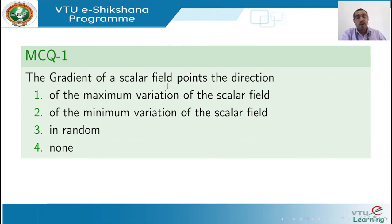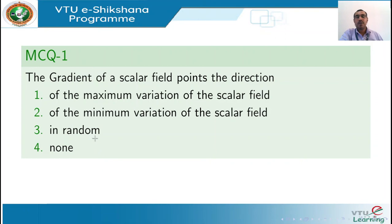Let us have a self-assessment through MCQs. The first MCQ: the gradient of a scalar field points in the direction of — option 1: maximum variation of the scalar field; option 2: minimum variation; option 3: random; option 4: none. The correct answer is option one: maximum variation of the scalar field.